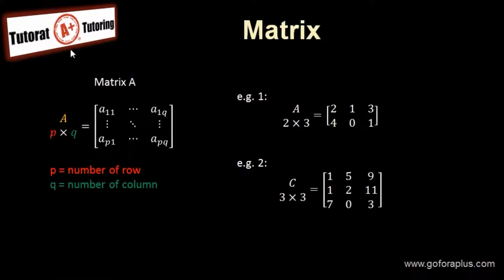So what is a matrix? A matrix should be written with a square bracket and with a capital letter. So this is matrix A. Now P times Q is the size of the matrix. P is the number of rows and Q is the number of columns. The row always comes first — don't mix it up.